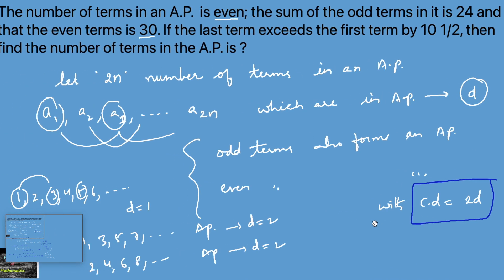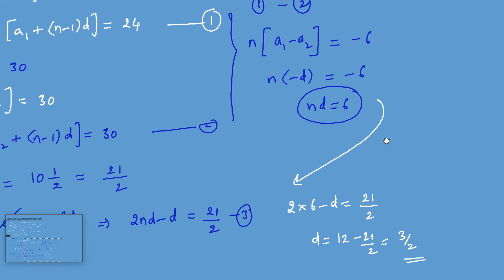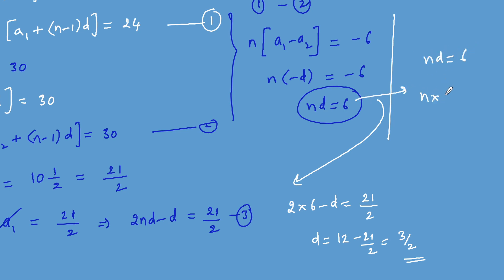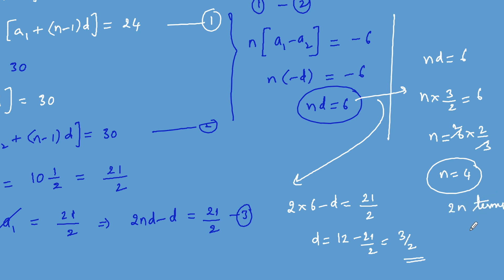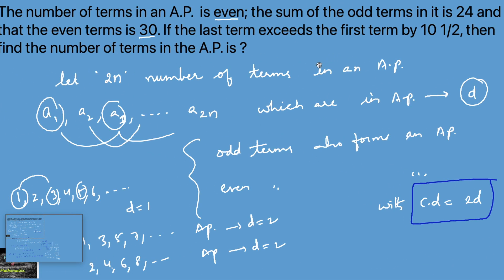Since we need the number of terms, substitute D = 3/2 into nD = 6: n × (3/2) = 6, so n = 6 × 2/3 = 4. Since there are 2n terms total, the number of terms = 2 × 4 = 8. Therefore, the number of terms in the AP is 8.